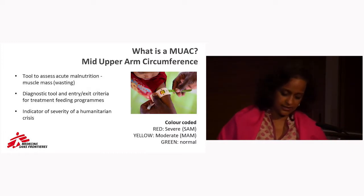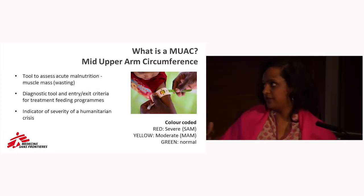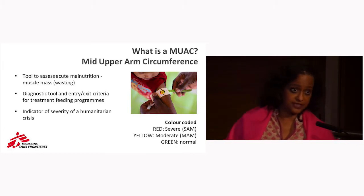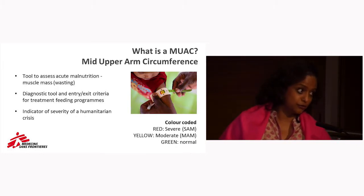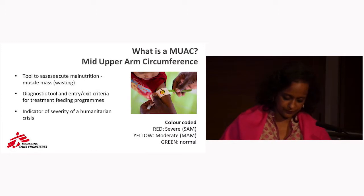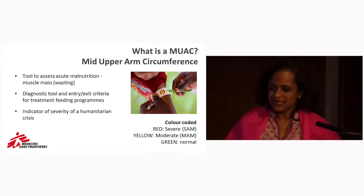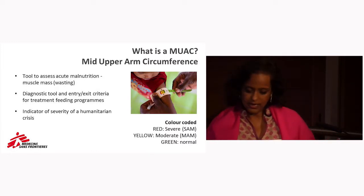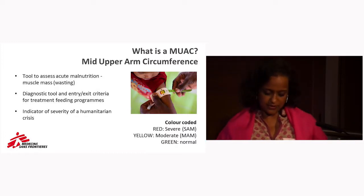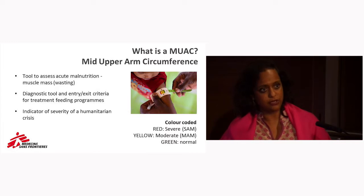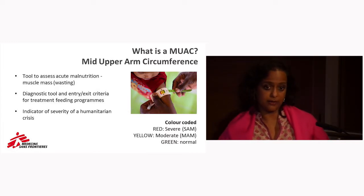It's also colour-coded for each different type of diagnosis: red for severe, yellow for moderate, and green for normal. Now it's increasingly used in the field, not only to diagnose different types of malnutrition, but also to define entry and exit criteria for different treatment feeding programmes, and also different types of treatment.